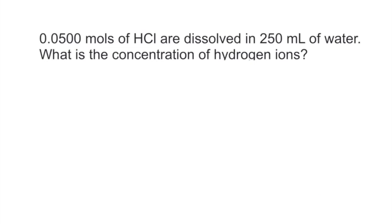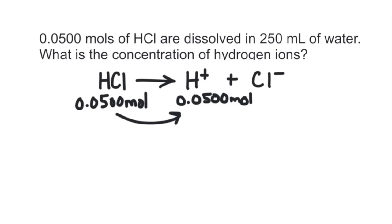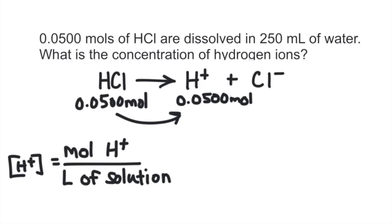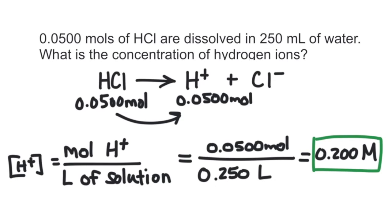For example: 0.05 moles of hydrochloric acid are dissolved in 250 milliliters of water — what's the concentration of hydrogen ions? Since hydrochloric acid is a strong acid, we can assume all of the HCl dissociates in water. So 0.05 moles of HCl gives 0.05 moles of hydrogen ions. Dividing 0.05 moles by 0.250 liters gives a 0.2 molar solution. Many acids can have even smaller concentrations, on the order of 10⁻³ or even 10⁻⁶ molar.